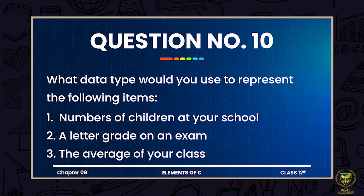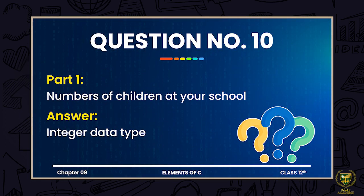This is question 10: what data type would you use to represent the following items? Three items are given on screen and you have to tell what data type to use if you want to represent each as a variable. The first one is number of children at your school. Since the number will be an integer value — your number is never 3.5 students or 4.07 students — it will always be a positive integer value. So we can represent it with an integer data type.